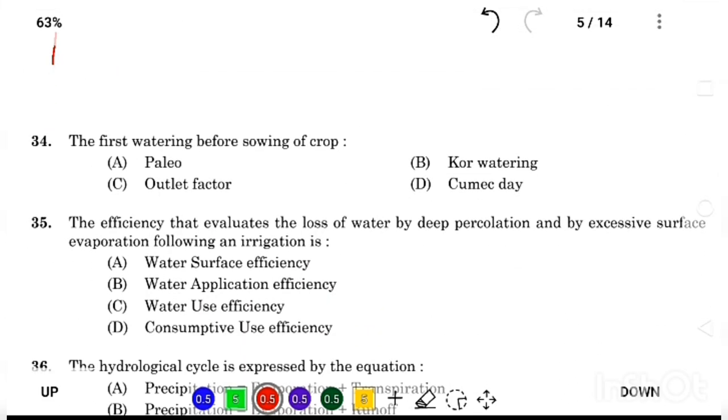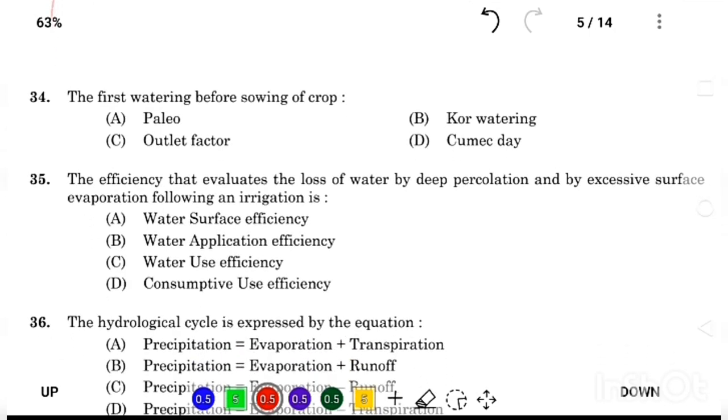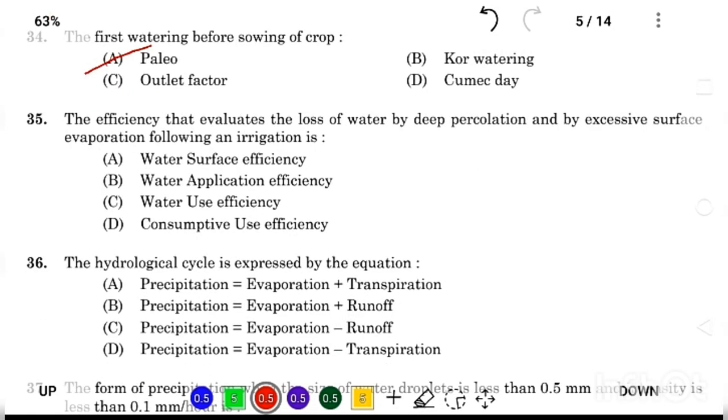The first water before sowing of crop, Answer Option A, paleo. The efficiency that evaluates the loss of water by deep percolation, by excessive surface evaporation, following an irrigation is Answer Option D, consumptive use efficiency.